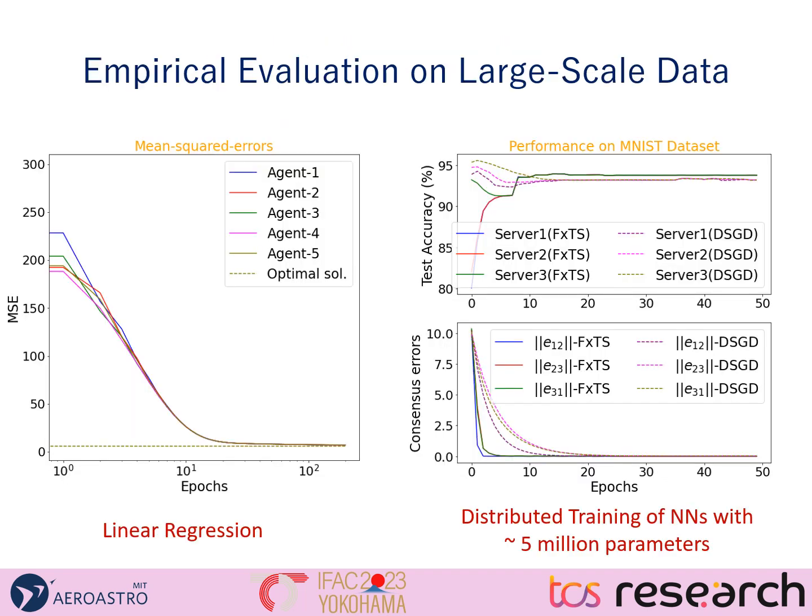We show some results of our proposed method. On the left, we show performance on solving a linear regression problem in a distributed manner, where all agents' values converge to the optimal solution within a fixed number of epochs. On the right, we show performance on classifying handwritten digits on the MNIST dataset, where the neural network consists of five million parameters. The test accuracy of the neural network trained using our method is just as good as distributed stochastic gradient descent, while the training time is much smaller because the consensus error reaches zero within a much smaller number of epochs compared to distributed SGD.